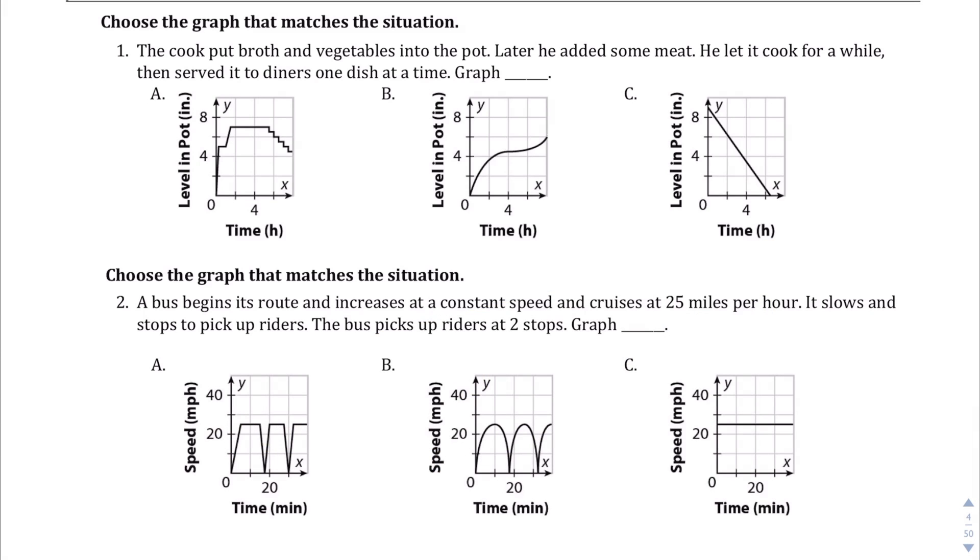Okay, so I'm going to assume that you've read the explained part, and we're going to jump into questions number one and two on page ten. We're asked to choose the graph that matches the situation. Number one: the cook put broth and vegetables into the pot. Later he added some meat. He let it cook for a while and then served it to diners one dish at a time.